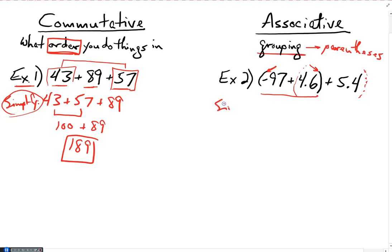What if I were to simplify this problem using the associative property? That is, what if I were to group my numbers differently? Instead of grouping the negative 97 and the 4.6 together, what if I wrote it like this: negative 97 plus 4.6 plus 5.4, and I'm going to group 4.6 and 5.4 together. Notice I'm not changing the order of my three numbers. They're still negative 97 and then 4.6 and then 5.4. I'm changing the way I'm grouping them. I'm grouping these two numbers together.